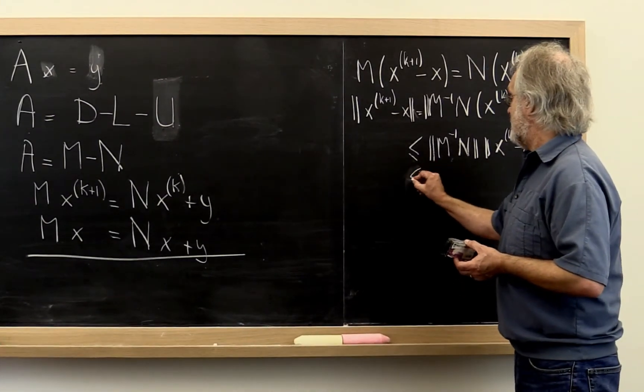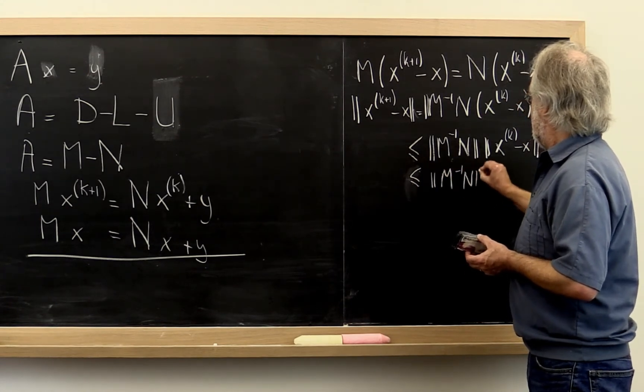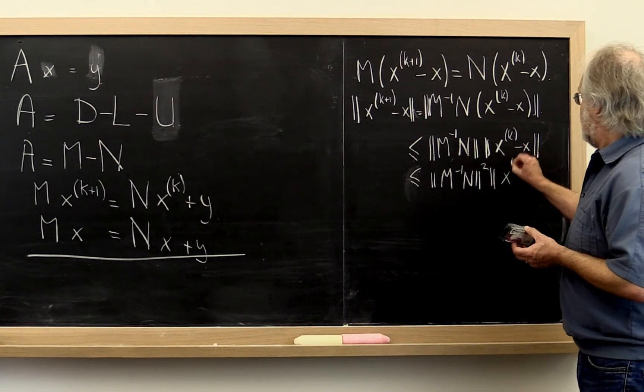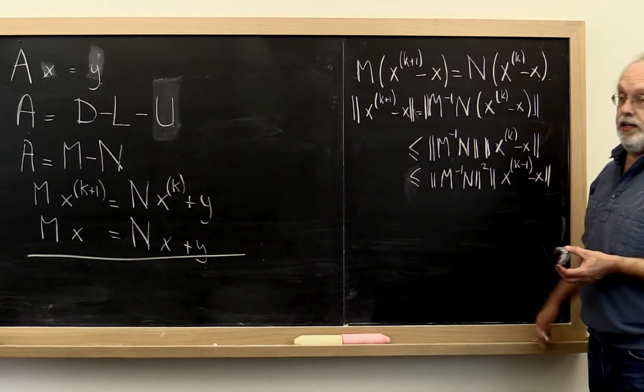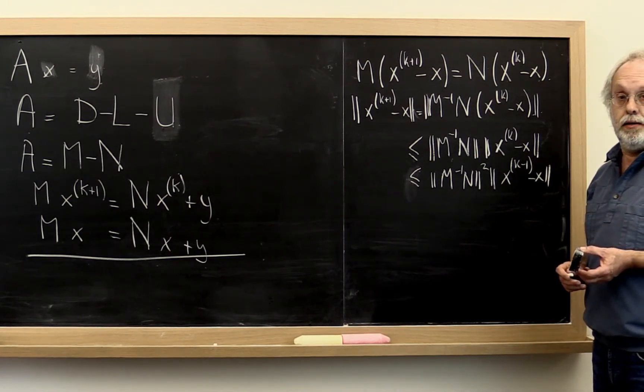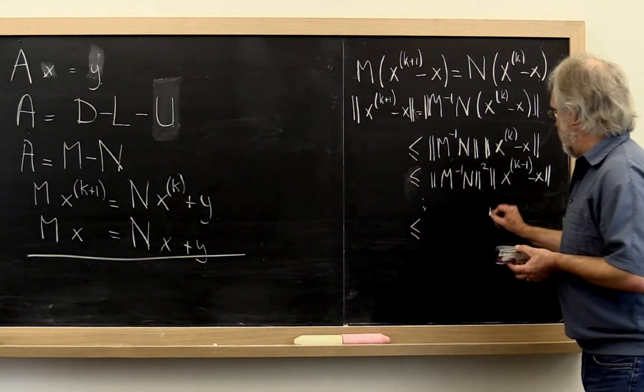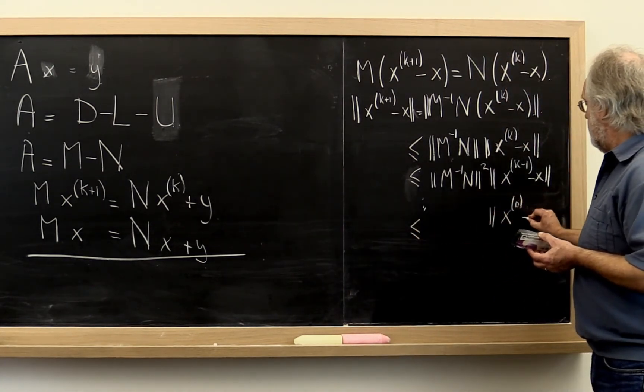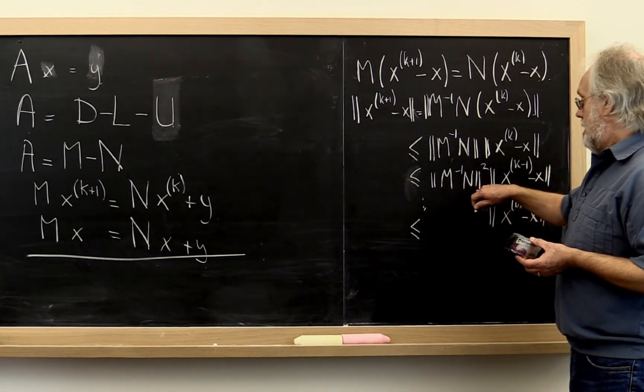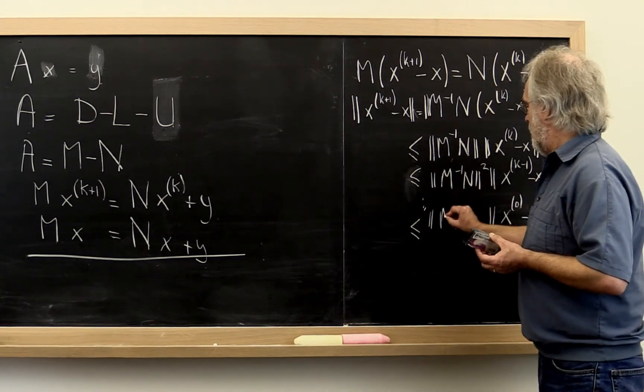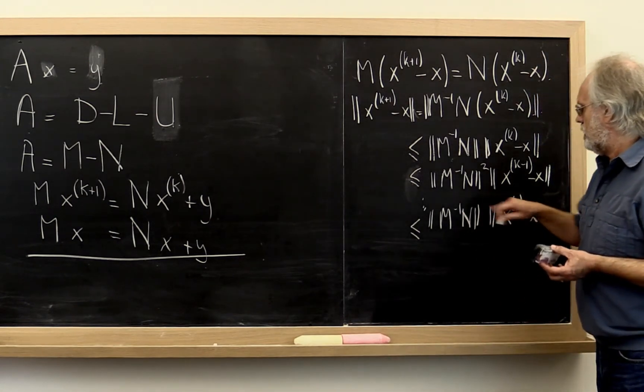This obviously is less than or equal to M inverse N squared times X_{k-1} minus X. Because we can just telescope this out. And if you do that many times, then you can bring the original vector X zero into the picture. And you can see that this right here should be M inverse N to, good question, to what power?